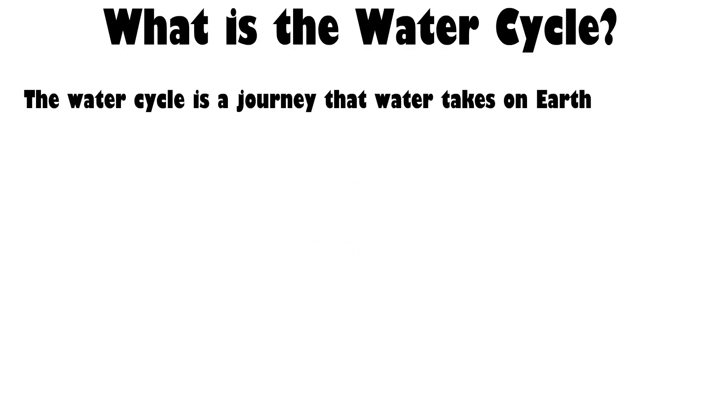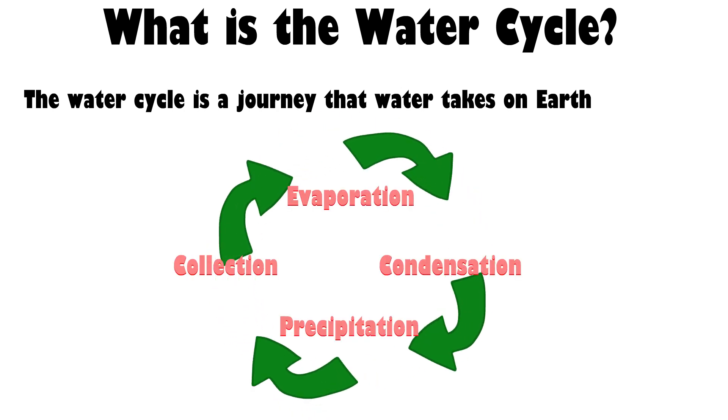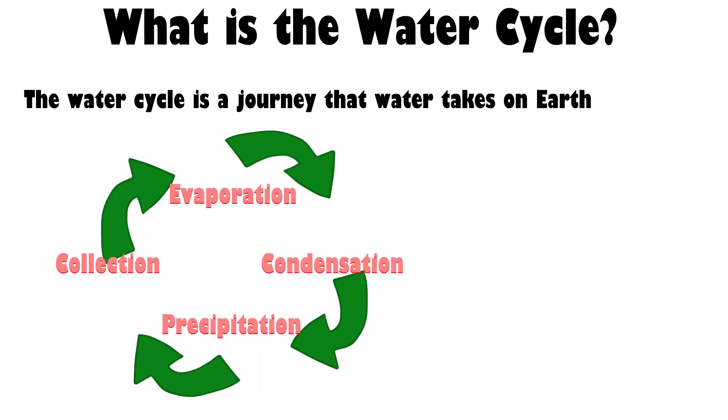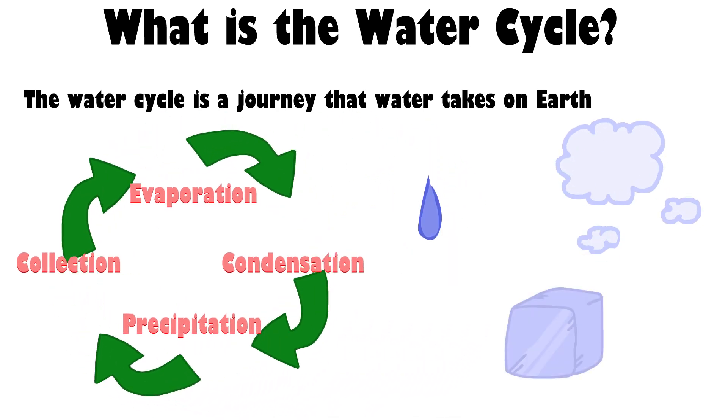The water cycle is a great journey that water takes on earth. The water goes through a system that continues on and on. In this cycle the water can be a liquid, gas, or a solid.